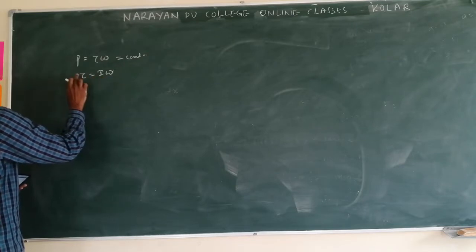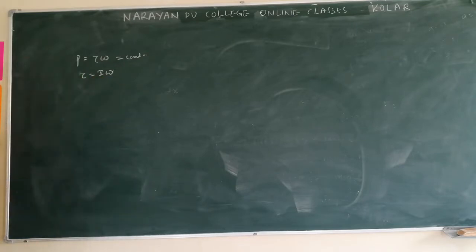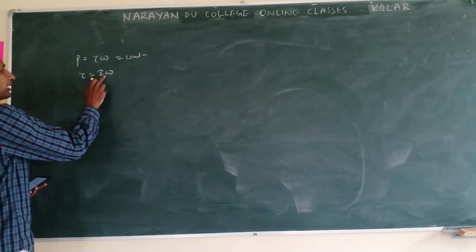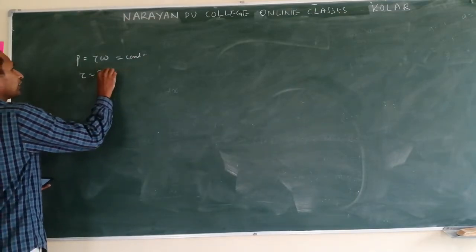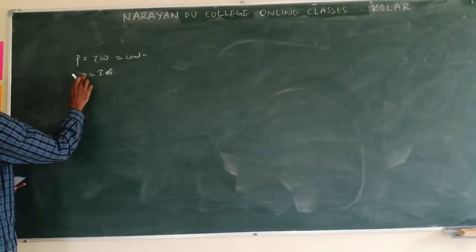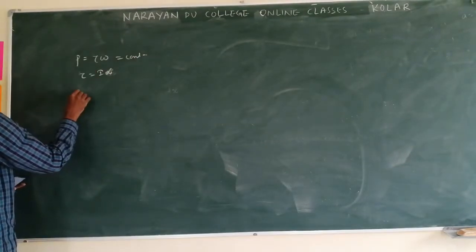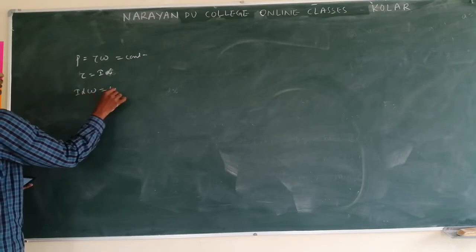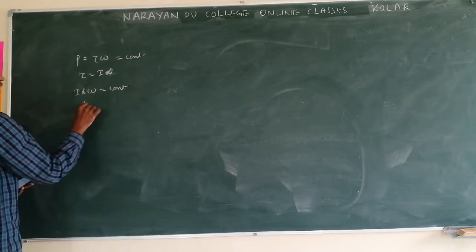Tau is equal to I alpha. So I tau is equal to I omega is wrong. This is I alpha. Now if you substitute this here, I alpha omega is equal to constant.